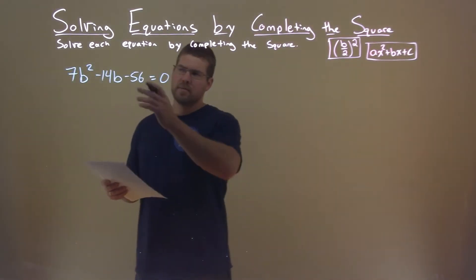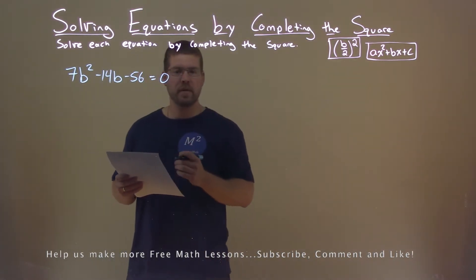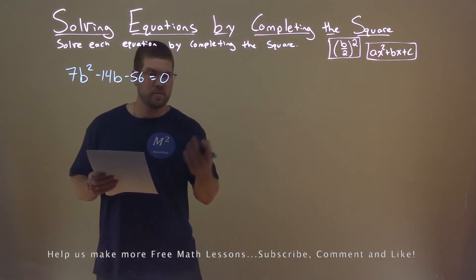We're given this problem right here: 7b squared minus 14b minus 56 equals 0. We want to solve this by completing the square.